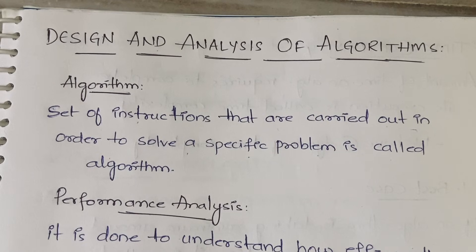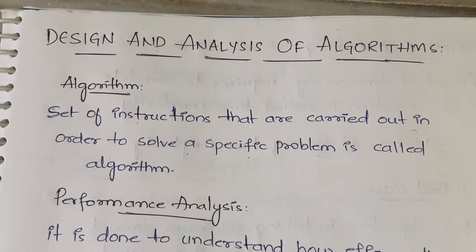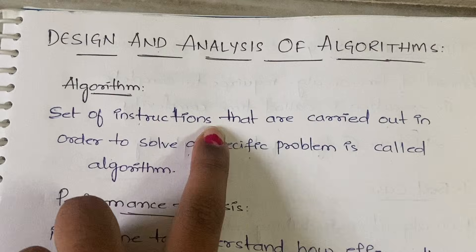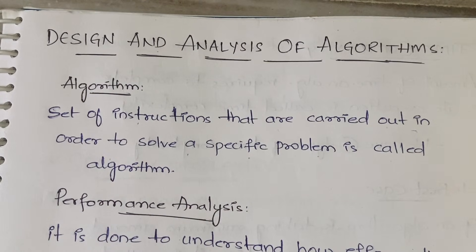If the remainder is zero, you will say that it is divisible by two. If the remainder is one, then you will print that it is not divisible by two. So like that, for each and every algorithm we have some step-by-step processes. Those step-by-step set of instructions that are carried out in order to solve a specific problem is called an algorithm.